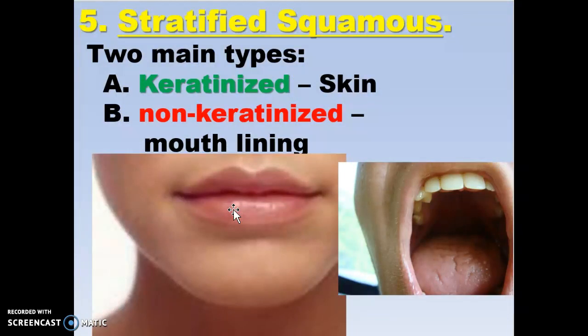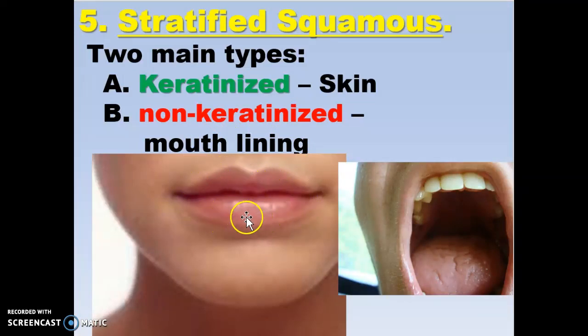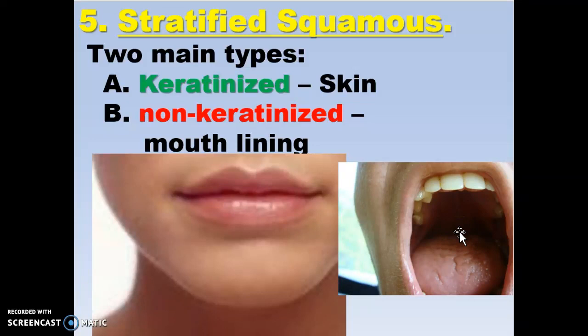Stratified squamous — the keratinized version is for outside, the non-keratinized is from the mouth to the anus. Your lips have very thin skin; the blood vessels show through, which gives them their characteristic pink color. Inside the mouth it's non-keratinized — you don't really need a lot of keratin protein on the outside linking them. They'll slough off, and you basically eat yourself as some of those slough off and you digest little parts of your own skin.